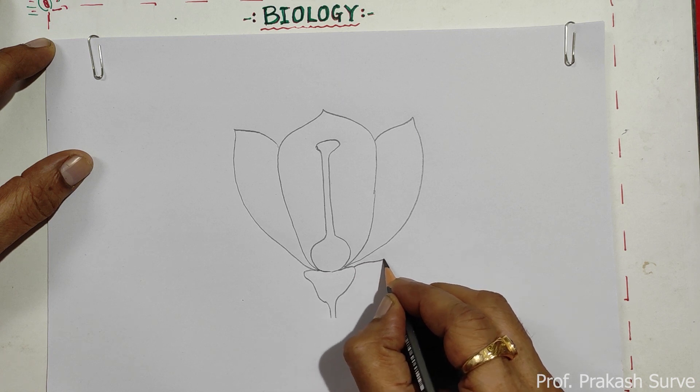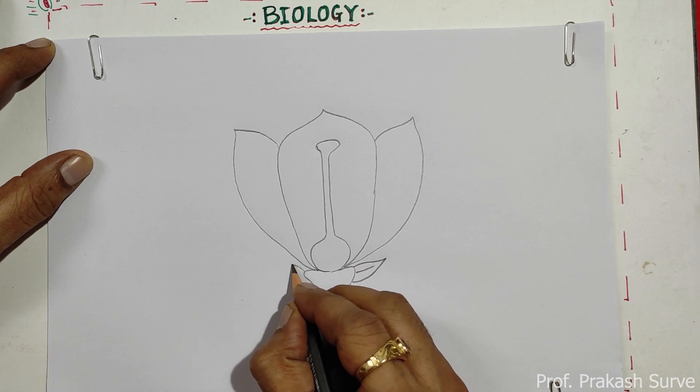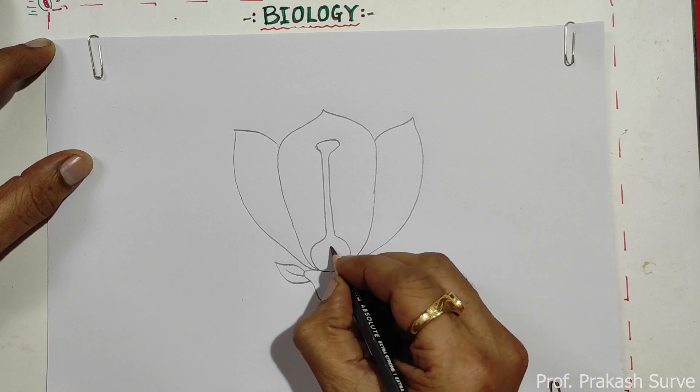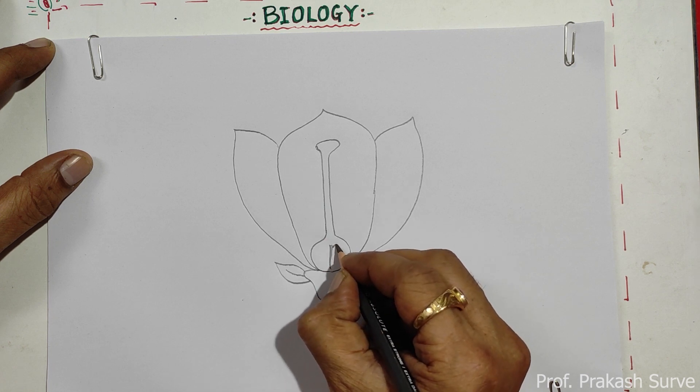Here we will draw the sepals. Inside this, the ovary, the ovules are there.